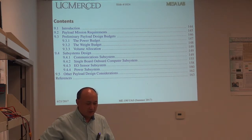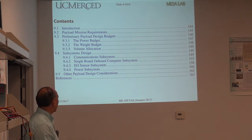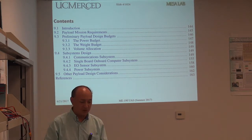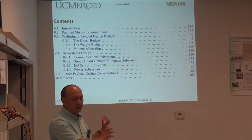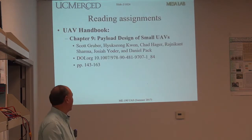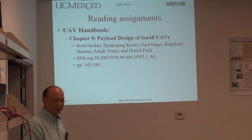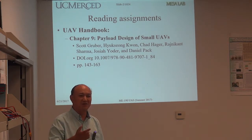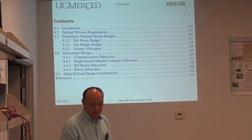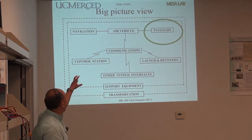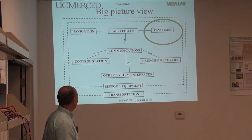There are four subsystems: one is the communication subsystem for the sensor payload; the single board onboard computer subsystem; the EO (electro-optical) sensor subsystem; and the power subsystem. The big picture is: you have an air vehicle with navigation, communication, and payloads. Payloads are very important.